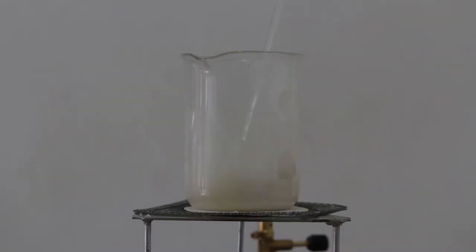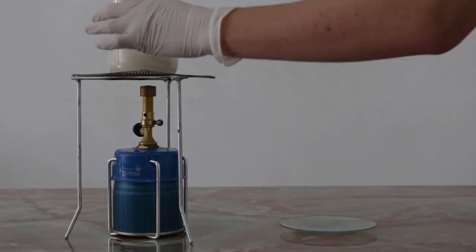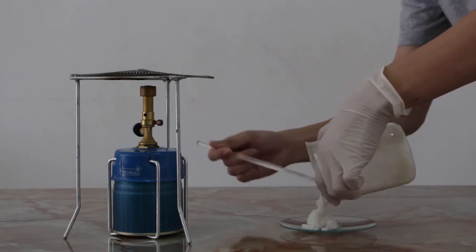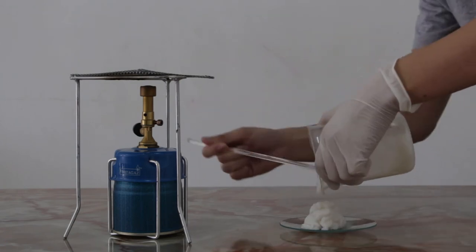When calcium acetate crashes out of solution, the Bunsen burner is turned off and the beaker is allowed to cool. The content of the beaker is then transferred to a watch glass and allowed to air dry for about a day.